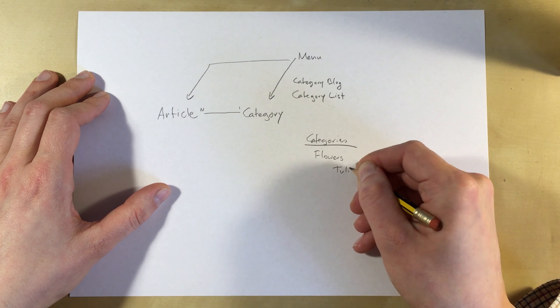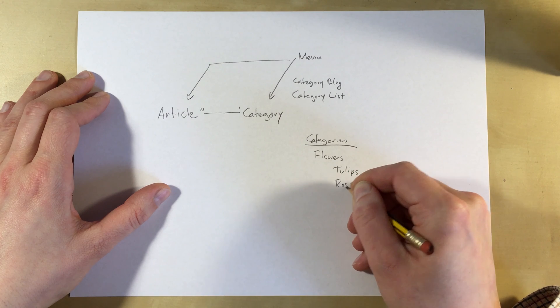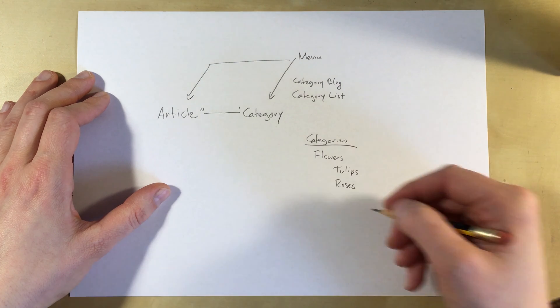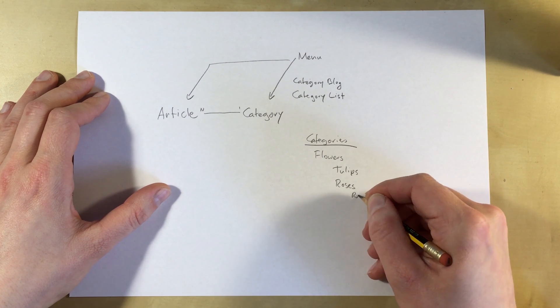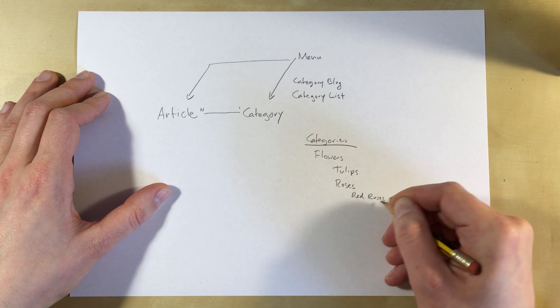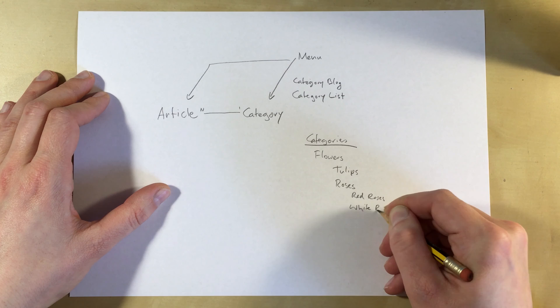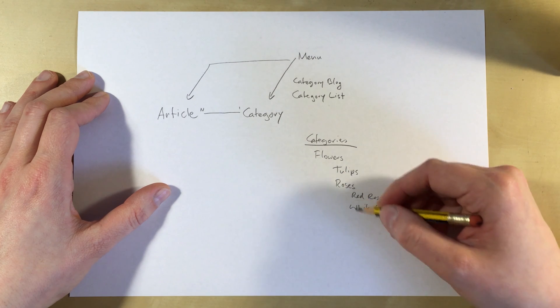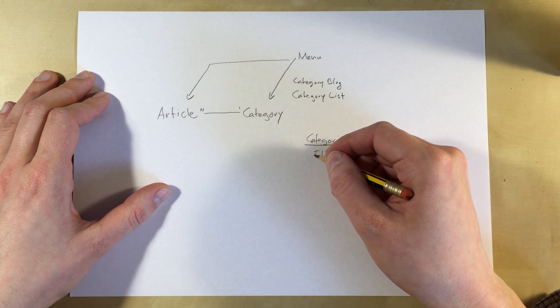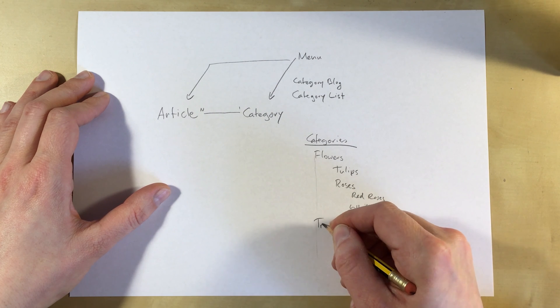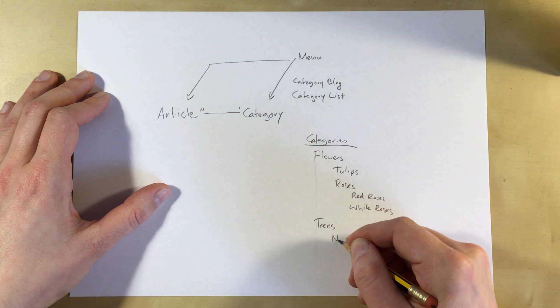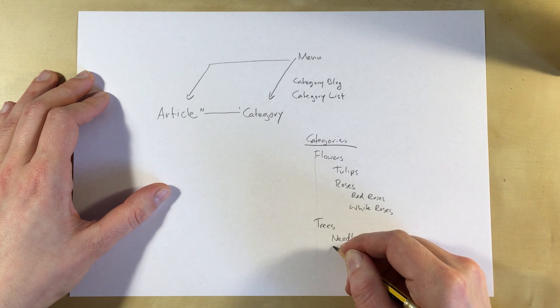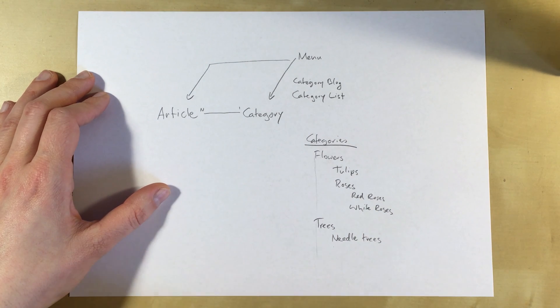We could have a subcategory called tulips and one called roses. You could then break this down even further. Under roses, we could have red and white roses. So we could have a parent category, child categories, and we could go down even further. On the same level as flowers, we could have trees, for example, needle trees and leaf trees, or whatever else you would want.